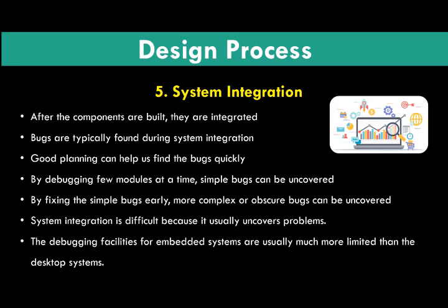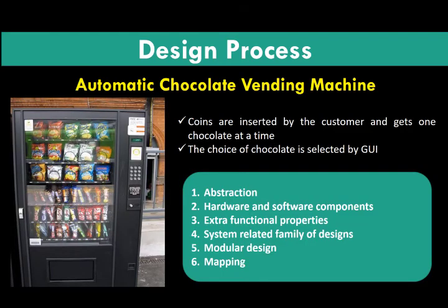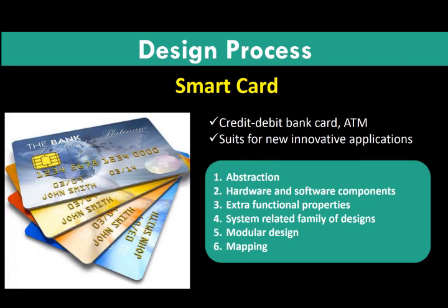To give a few examples: automatic chocolate vending machines. We have to list down these six major steps in the design process and identify the components for this automatic chocolate vending machine. You can identify the system-related family designs, just like coffee vending machines or lucky draw machines available in shopping malls. Smart cards are also another example of this design process.